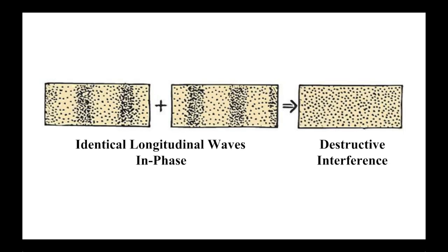Destructive interference in longitudinal waves occurs when compressions and rarefactions of two or more identical waves traveling in the same direction overlap, decreasing amplitude. In other words, the waves are out of phase.